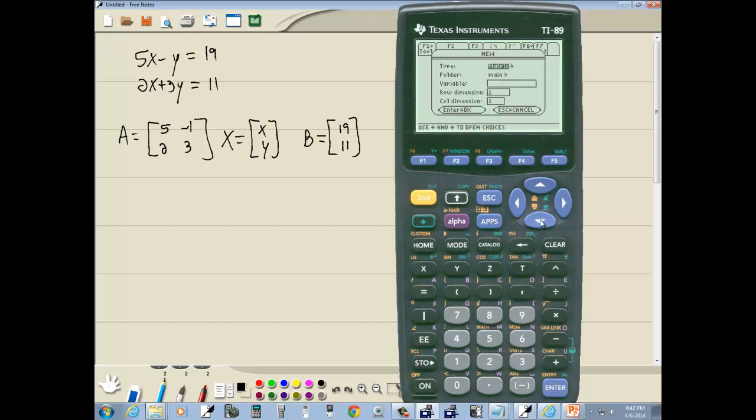Press enter, and then down arrow there and down arrow to the variable. Now I'm on A and I can never tell if alpha lock's on. Let me go ahead and press equals. Yeah, I did put A there.